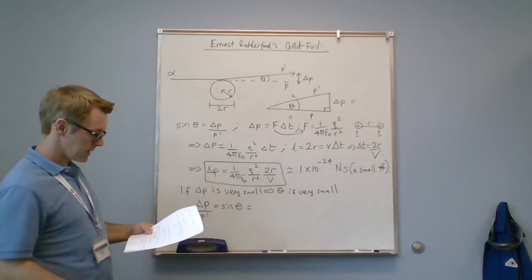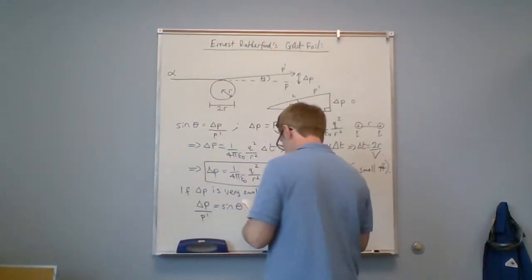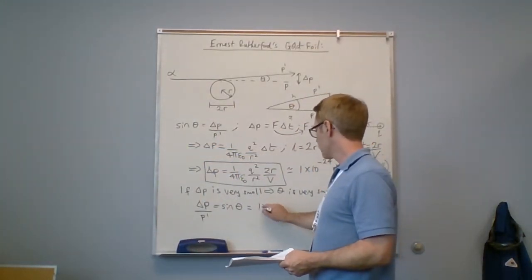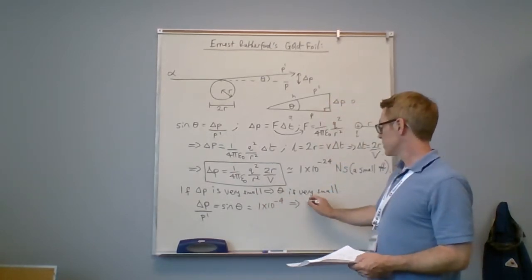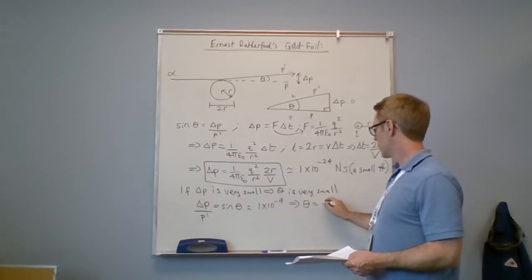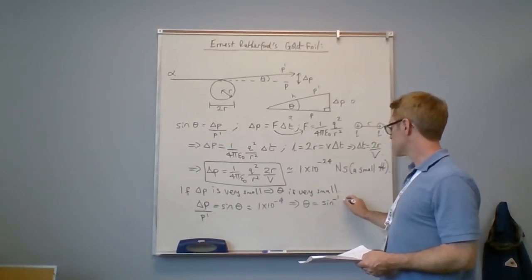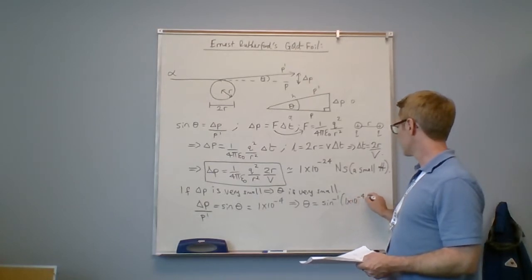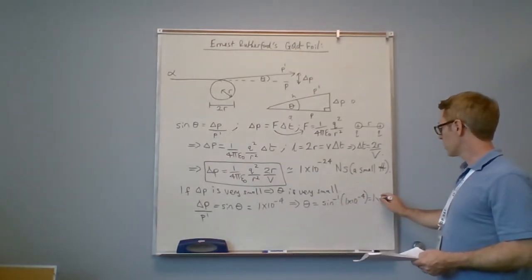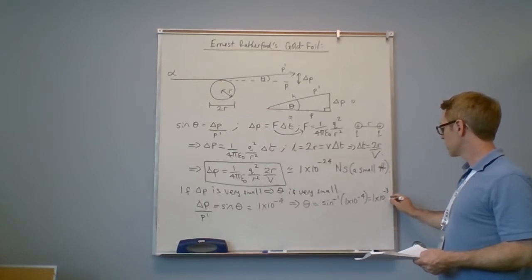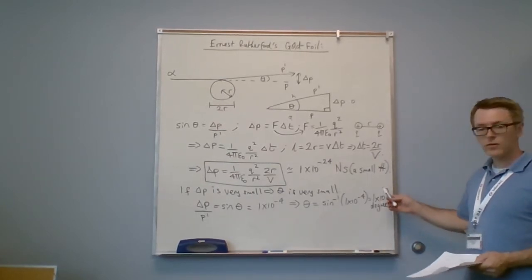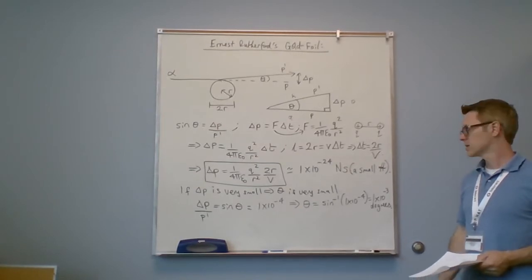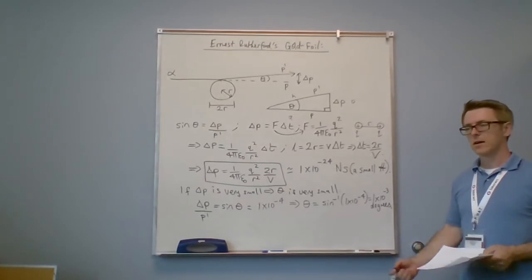Delta P over P prime is sine theta. From this trigonometric equation, if we actually put some reasonable values in, this is approximately 1 by 10 to the negative 4, which implies that theta is inverse sine 1 by 10 to the negative 4, which is about 1 by 10 to the negative 3 degrees. So indeed, it's very small. It's approximately order of magnitude 10 to the negative 3 degrees, so 1,000th of a degree. That's almost unmeasurable.